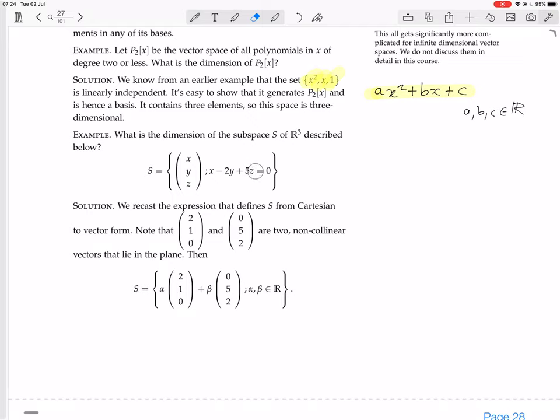So we have a Cartesian equation. What we would like now is rather a vector equation. I think you might know that this is a Cartesian equation for a plane. We want a vector equation for a plane now. We recast the expression that defines S from Cartesian to vector form. Note that (2,1,0) and (0,5,2) are two non-collinear vectors that lie in the plane. So 2 minus 2, so 2x equals 2, y equals 1, that's 0. If you let z be 0, you have something that satisfies the equation. Or if you have 5 and 2 for y and z and 0 for x, that also gives you a vector that satisfies the equation. They are not collinear, not scalar multiples of each other, so they are independent.